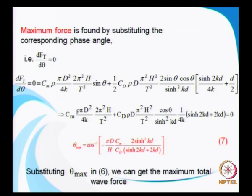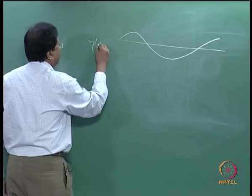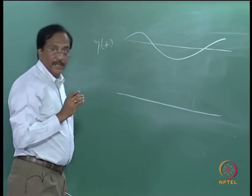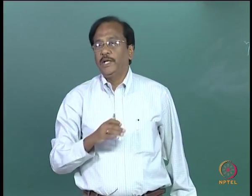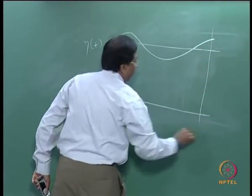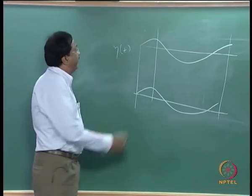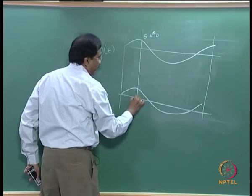Now that you have determined θ_max — which is the phase at which the maximum force occurs — for example, if the wave profile follows mostly drag force, and if wave and force are in the same phase, then at theta equal to 90 degrees the force will be maximum. This is theta equal to 0 through 360 degrees.